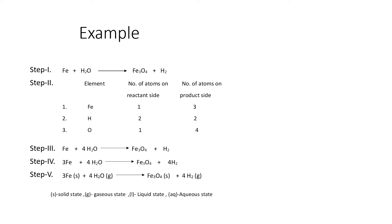On the product side, iron contains three atoms, oxygen contains four atoms, and hydrogen contains two atoms. The element present in the highest number is oxygen. So in step three, we will balance the oxygen atom first by adding 4 in front of the water molecule, so now oxygen is balanced.